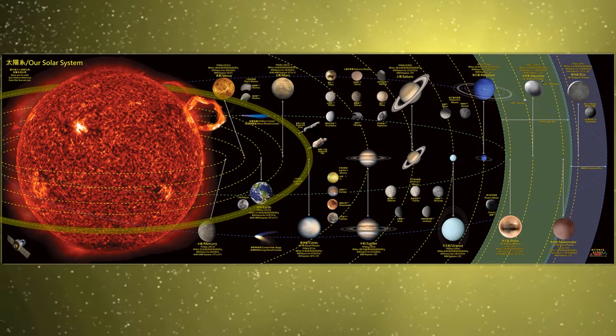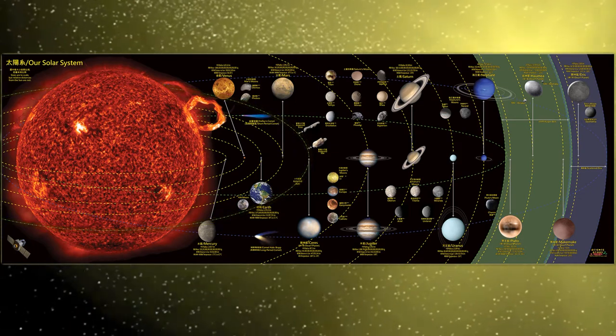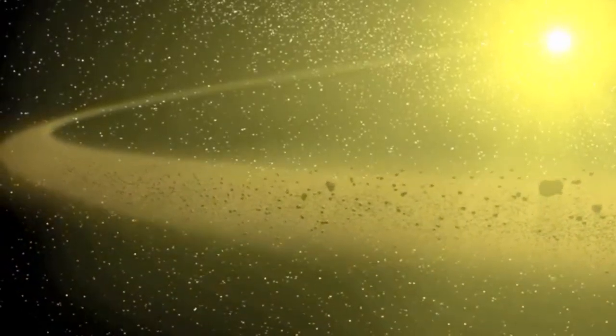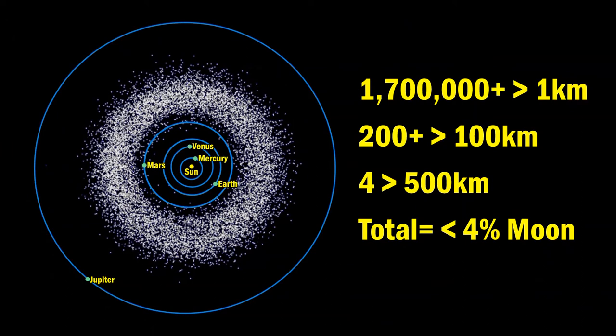In between Mars and Jupiter, there is the asteroid belt. Bits of material that were unable to form even a small planet because of the gravity of Jupiter affecting their movement. The asteroid belt is made out of millions of asteroids. There are maybe a bit more than 1.7 million asteroids that are a kilometer wide. There are more than 200 asteroids that are larger than 100 kilometers wide, but only four that are more than 500 kilometers wide. But even if you took all the matter that makes up the asteroid belt now, it would only have 4% of the mass that the Moon has.